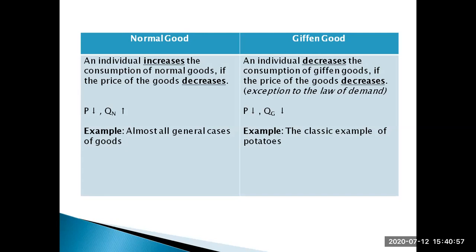You start increasing the consumption of the higher-quality, more expensive toy — substituting the cheaper good with the better-quality good. So the cheaper good that you're no longer buying is a giffen good to you: you're reducing its consumption even as its price falls, ceteris paribus — your income and prices of other goods remain unchanged. This is an exception to the law of demand. Normally, if price increases you reduce consumption and if price falls you increase consumption, but for giffen goods it's the opposite: price falls, consumption falls; price rises, consumption rises.